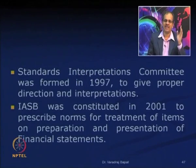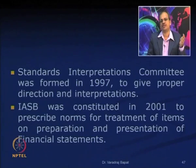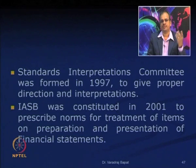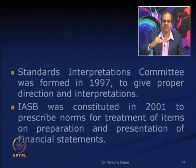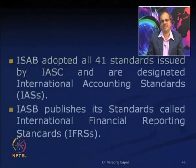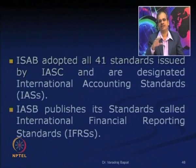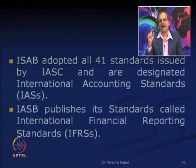Following the 1973 formation of IASC, a Standard Interpretation Committee was formed in 1997, because a number of standards needed to be properly understood and interpreted. As a next step, the IASB — International Accounting Standards Board — was created in 2001 to prescribe norms for the preparation and presentation of financial statements. IASB adopted all 41 standards issued by the IASC, and these are now known as IAS — International Accounting Standards.